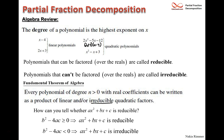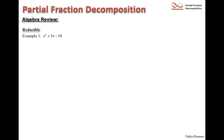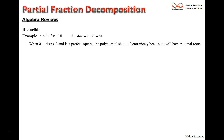Let's look at four quadratic polynomials. The first is x² + 3x - 18, where b² - 4ac = 81. When b² - 4ac is a perfect square the polynomial factors nicely — this one factors as (x + 6)(x - 3).